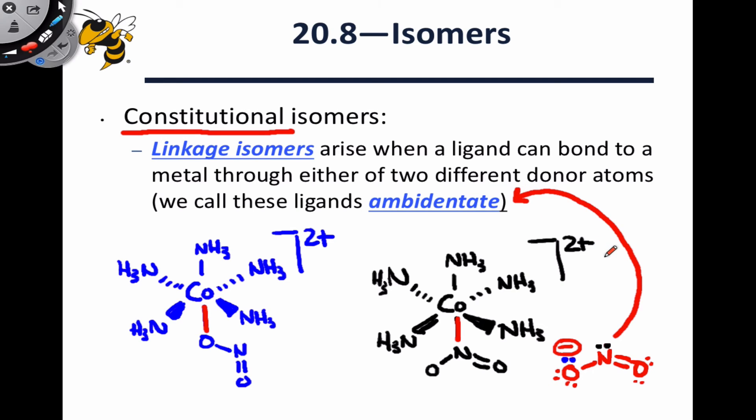Ligands such as NO2⁻, which have this ability to bond through multiple different donor atoms, are called ambidentate. We want to distinguish that from bidentate — bidentate means a molecule has two binding sites, while ambidentate means that a monodentate ligand can bond through multiple possible donor atoms. When identifying linkage isomers, look for an ambidentate ligand in the structure that is bonded in two different ways to the metal center.